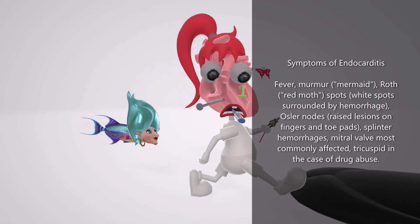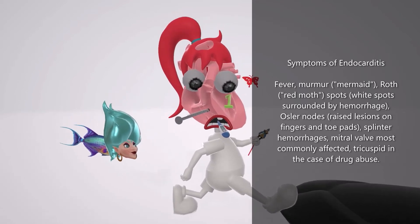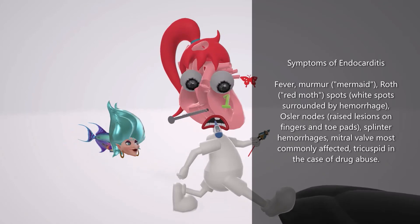Her face is not really a face — it's a heart that's open and we can see the mitral valve, which has a number one in it. This helps us remember that the mitral valve is the most frequently involved valve in endocarditis. The tricuspid may also be involved, and this is usually associated with IV drug abuse — that's why she has this syringe going through her tricuspid valve.